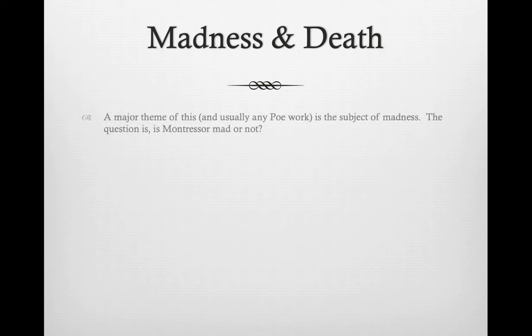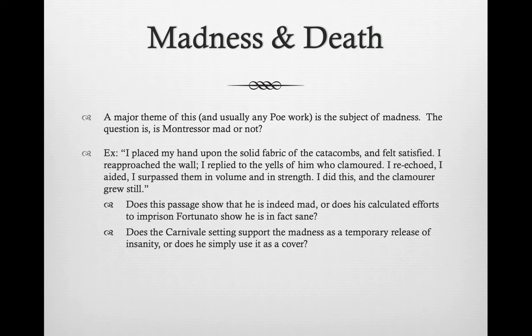Madness and death are really two major themes in this story — a repeated theme throughout Poe's works. The question is: is Montresor mad or not? For example, after walling up Fortunato he puts his hand on the catacombs and feels satisfied. He replies to Fortunato's yelling, going back and forth because he enjoys it, waiting until the clamor inside goes quiet. The question is whether this shows a crazy person, or someone very calculated, motivated, calm, and purposeful in his actions.